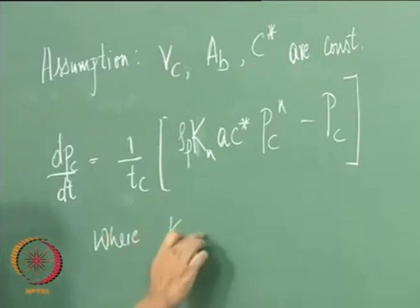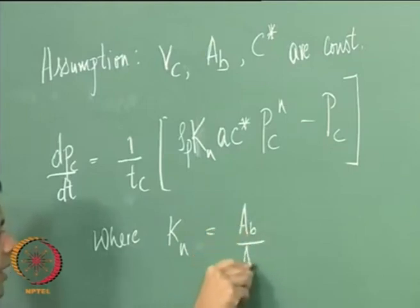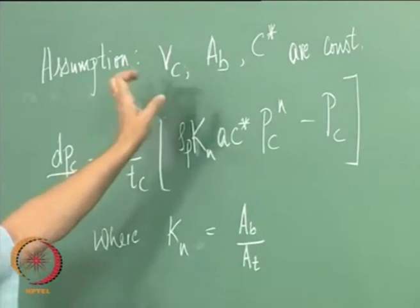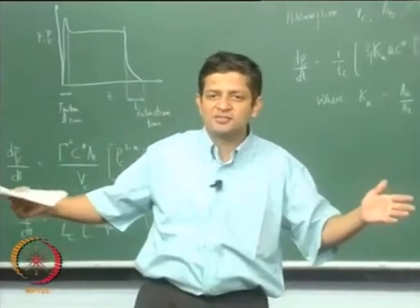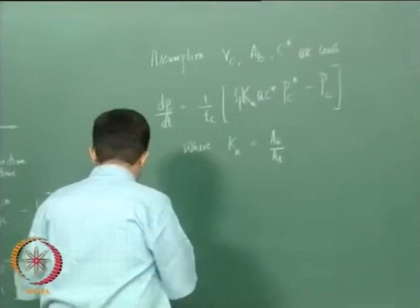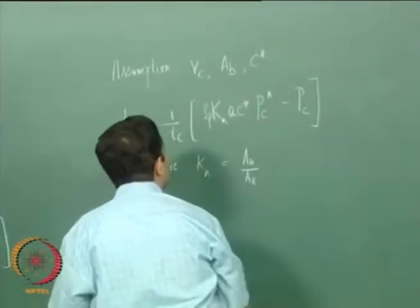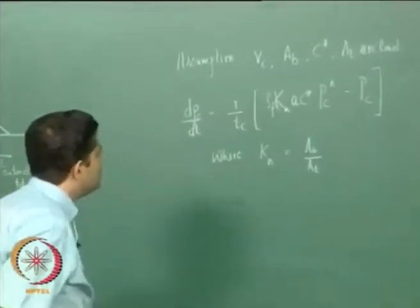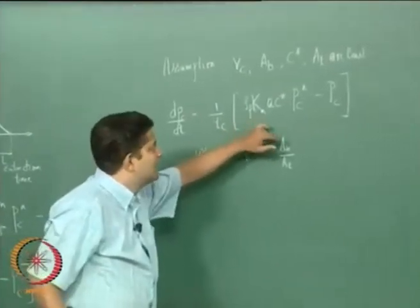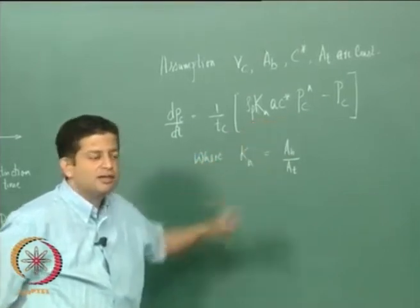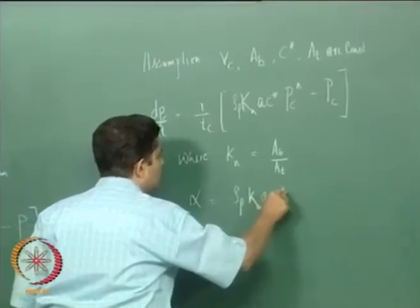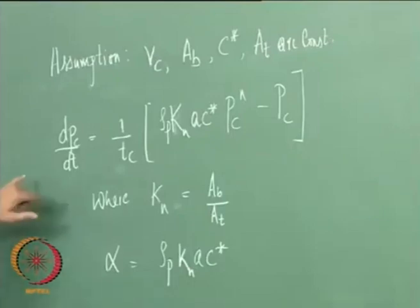KN is equal to AB by AT. The throat area also does not change with time in this case during the initial phase of ignition, so KN will also be constant. This entire term is a constant and I can absorb it as alpha. I will call alpha equal to ρp · KN · A · C-star. So if I want to find the time for ignition, all I need to do is integrate this equation.